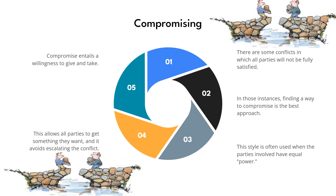Example 2: Project timeline. Imagine a project where the project sponsor expects an aggressive delivery timeline, while the project team is concerned that such a tight schedule might compromise quality. In a compromising approach, the project manager facilitates a conversation about requirements, risks, and constraints, ultimately agreeing on a slightly extended timeline that maintains a high standard of work while still delivering within a reasonable timeframe. Compromising is particularly useful when parties have relatively equal influence, requiring effective communication, a willingness to negotiate, and focus on achieving the project's objectives within stakeholder constraints.